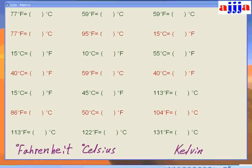Let's get Fahrenheit to Celsius. So take 59°F: minus 32 gives us 27. Divide by nine — that's 3. Then multiply by 5 — which is 15. So 59°F equals 15°C. See how easy that is!